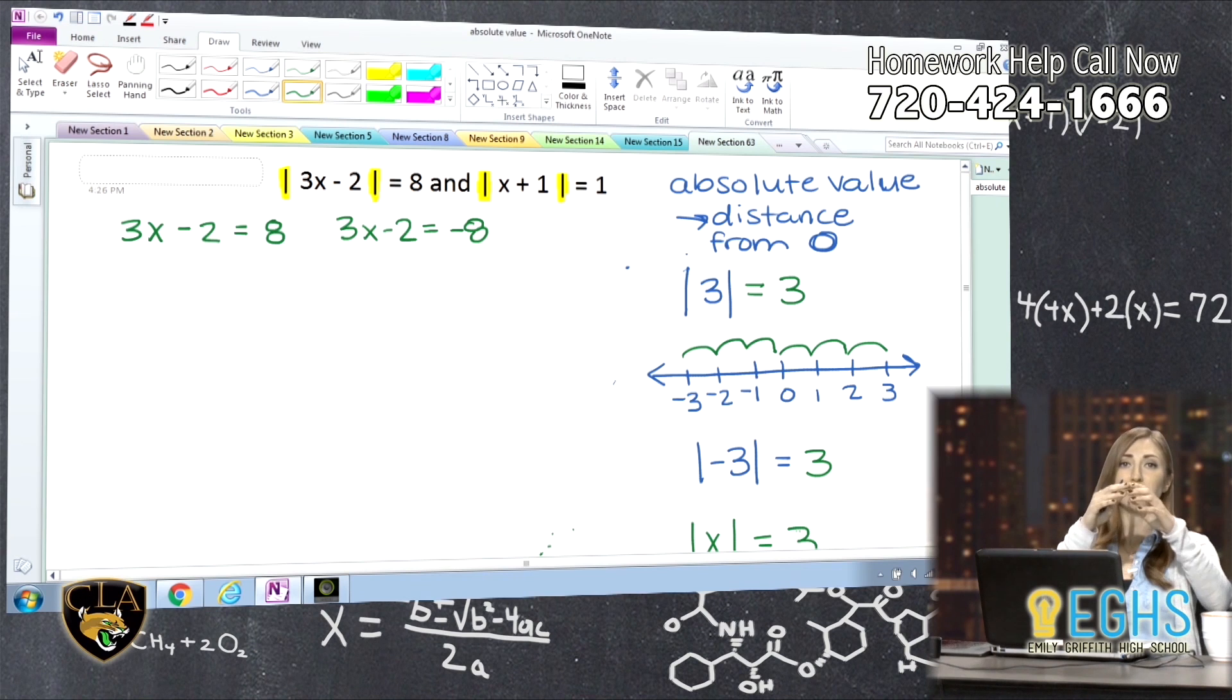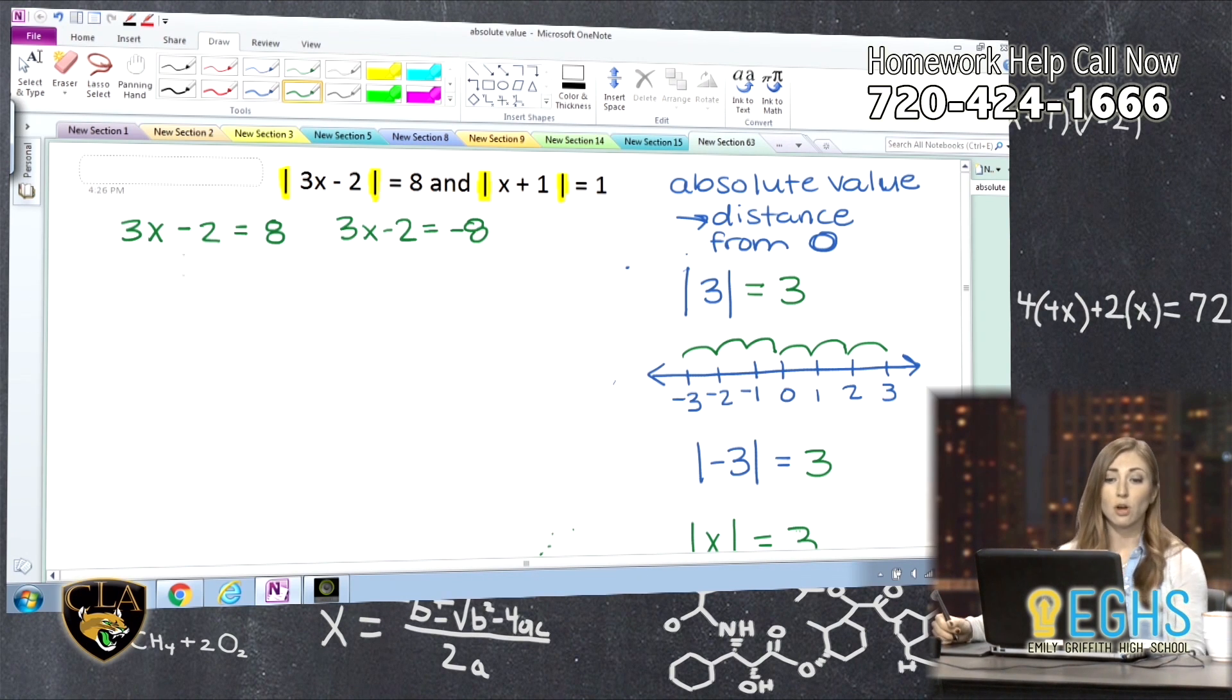So we've kind of bust into two equations at this point, and then we can drop those absolute value signs, because we're really showing the meaning of it when we bust into these two equations, positive eight and negative eight. So from here I can just solve, what is 3x minus 2 to give me a distance of eight? We just solve the equations like you would solve any algebra equation. We're going to isolate the variable.